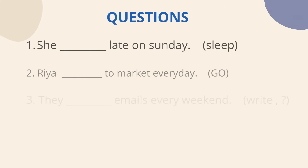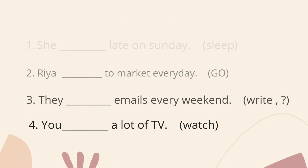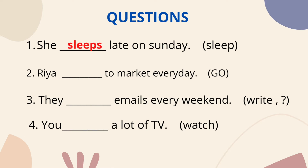Look at question no.1 — Simple Present sentence. We have given the main verb: 'She ___ late on Sunday.' The answer would be 'she sleeps late on Sunday.' It's third person singular — he, she, it — that's why 'sleeps.'